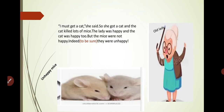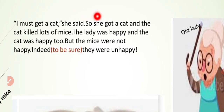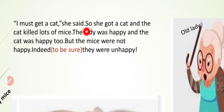'I must get a cat,' she said — meaning she must obtain a cat. So she got a cat. 'The cat killed lots of mice' — the cat killed many mice because cats hunt mice. 'The lady was happy' — she was happy because the mice problem was solved. 'And the cat was happy too' — the cat was also very happy because it was getting its food.